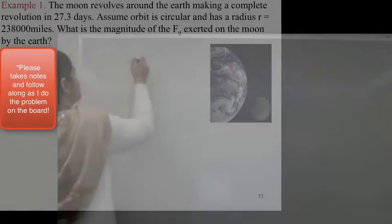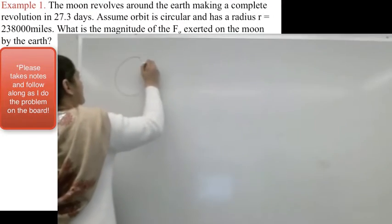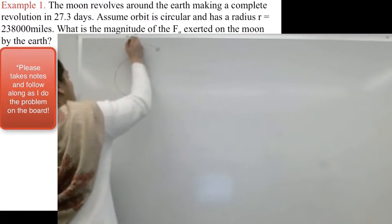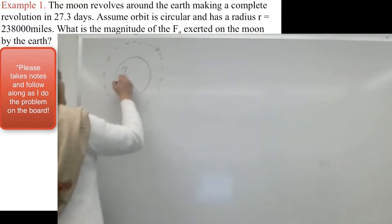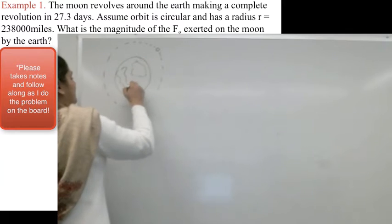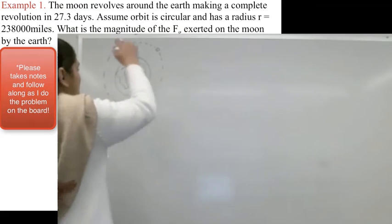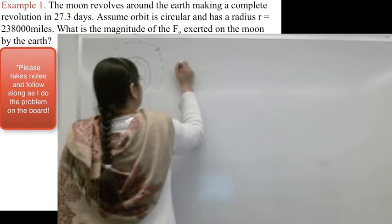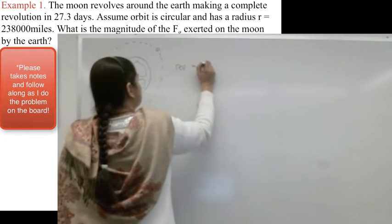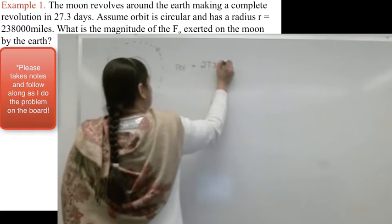So this question is saying that we have the Earth and we have the Moon that goes around the Earth. And it gives us, so this is my Earth. I'm just going to make a random Earth. And this is a Moon that goes around it, and it says that the revolution of the Moon around the Earth takes about 27.3 days.